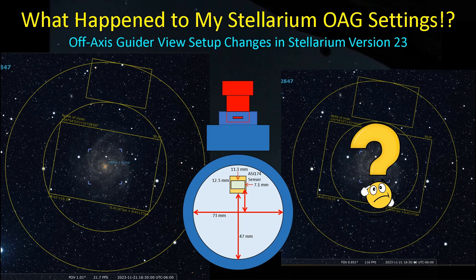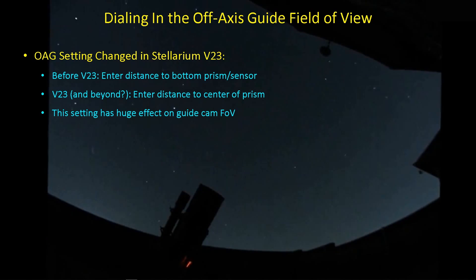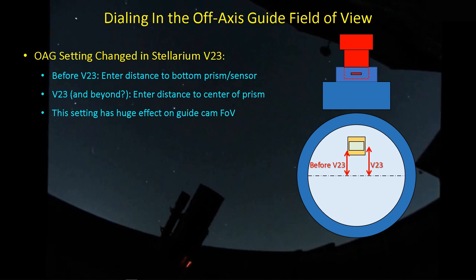I just wanted to go through that. Many of you have sorted this out already. There are a couple of other things that we can talk about in terms of guide camera orientation within the OAG. So let's get started. Mostly we want to spend a little time talking about how Stellarium presents and asks you, the user, to enter data into the Oculars tab in order to account for where the stalk is or where the prism is relative to the center axis of the telescope.